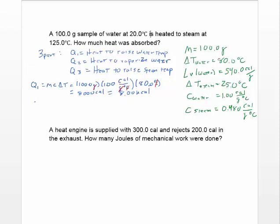For Q2, the heat to vaporize the water: Q2 = m × L_V = 100 grams × 540 cal/g. Grams cancel and we get 54,000 calories — it takes a lot to vaporize water. That equals 54 kilocalories.